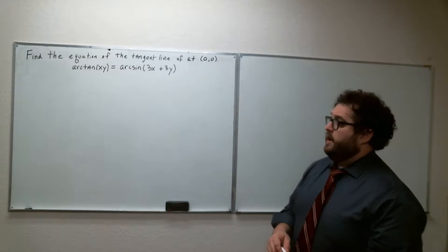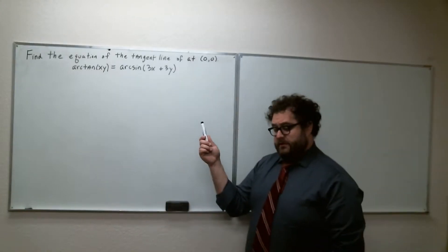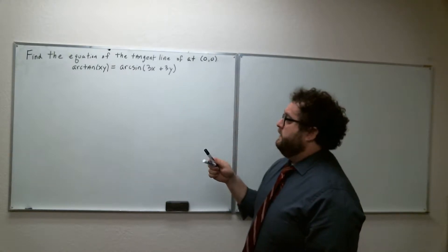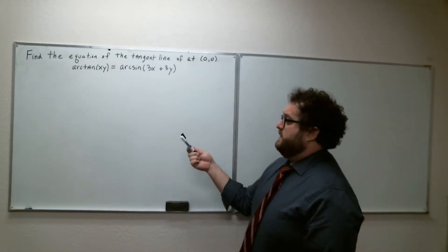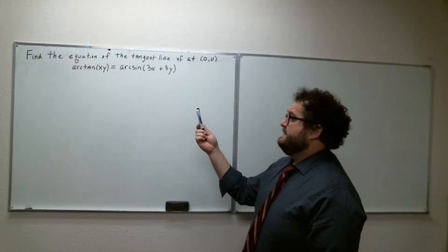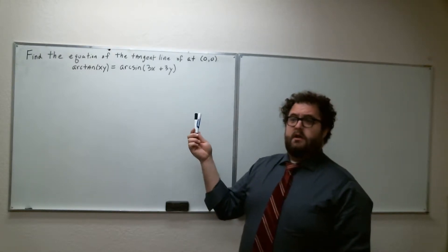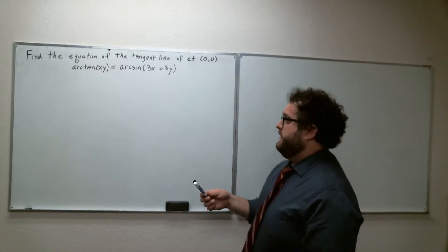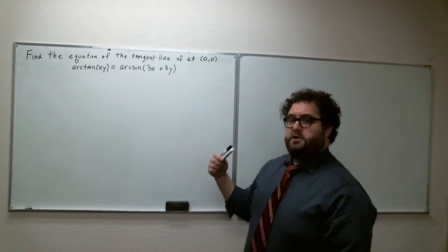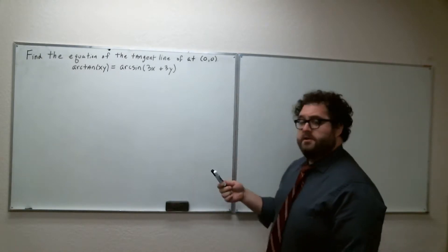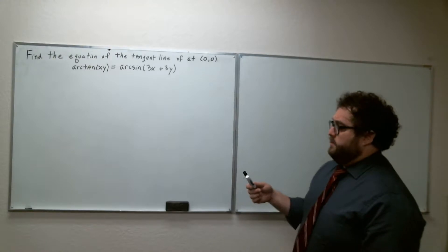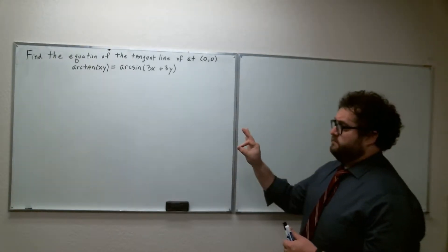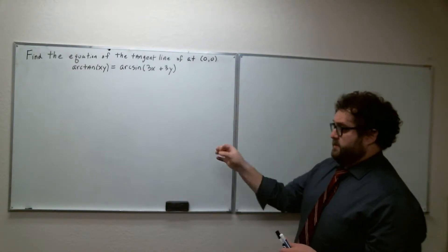What makes this tricky is that we have an implicitly defined relation involving inverse trigonometric functions. So let's just follow the derivative rules we've learned and see what happens — it's probably going to involve a lot of algebra. We want to find dy/dx, and since this is implicitly defined, we just take the derivative with respect to x of both sides of the equation.